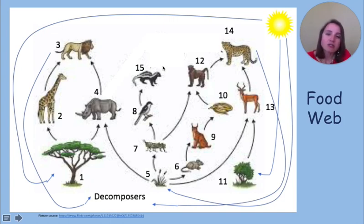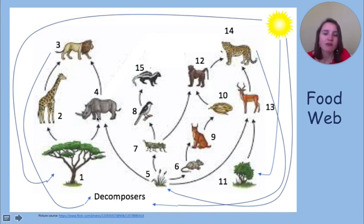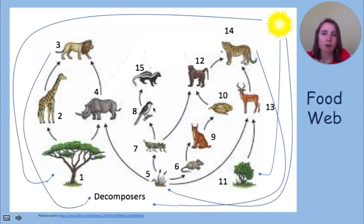We can also tell whether an organism might be a carnivore, omnivore, or an herbivore by looking at a food web. For instance, if I look at number eight, it's a small bird. I can use my background knowledge that most small birds eat berries or seeds — so they eat plants. But this small bird is also eating an insect. So because it eats animals and plants, I know that number eight is an omnivore.